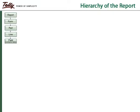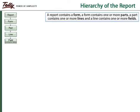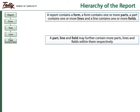The hierarchy of a report starts from the form and ends in the field, which is the container of data. Let us make use of different colors for a part, line, and field to understand the concept better.